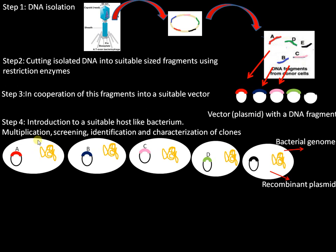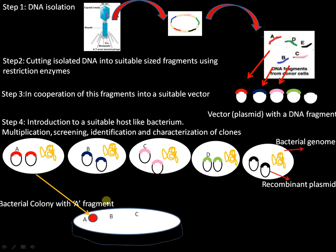So we have the five fragments incorporated into different bacteria. This is followed by multiplication inside the bacterium — the plasmids replicate, producing a number of copies of that particular fragment. From these, we need to identify the colonies that contain our fragment of interest through screening and identification of these clones. The bacteria multiply continuously, forming colonies.